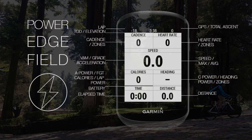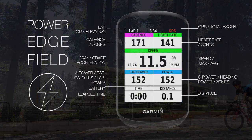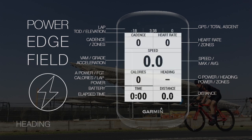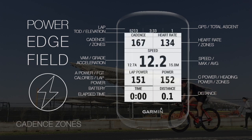Dynamic fields are: lap power, A power, or calories; and power, C power, or heading.